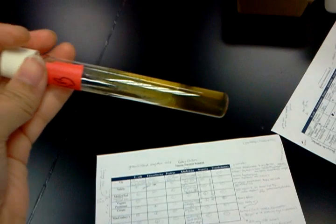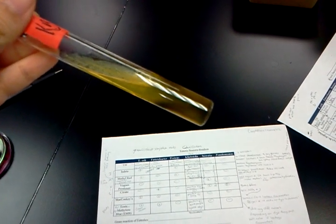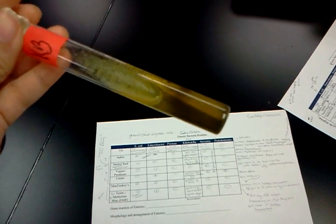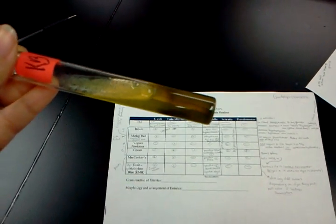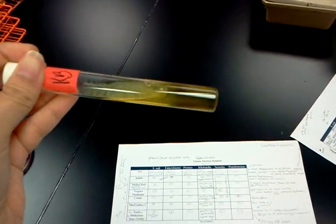Here is a TSI tube with black precipitate, also positive for... what is it... it's yellow on the bottom and yellow on the top, so does that mean lactose and sucrose fermentation but no gas production? Nope.